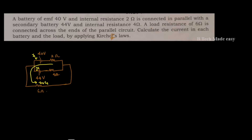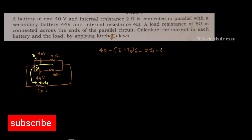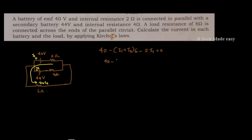Applying KVL to the first loop and setting the sum equal to zero: 40 minus (I1 plus I2) into 6 minus 2I1 equals 0. Expanding: 40 minus 6I1 minus 6I2 minus 2I1 equals 0, which gives the first equation: 8I1 plus 6I2 equals 40.